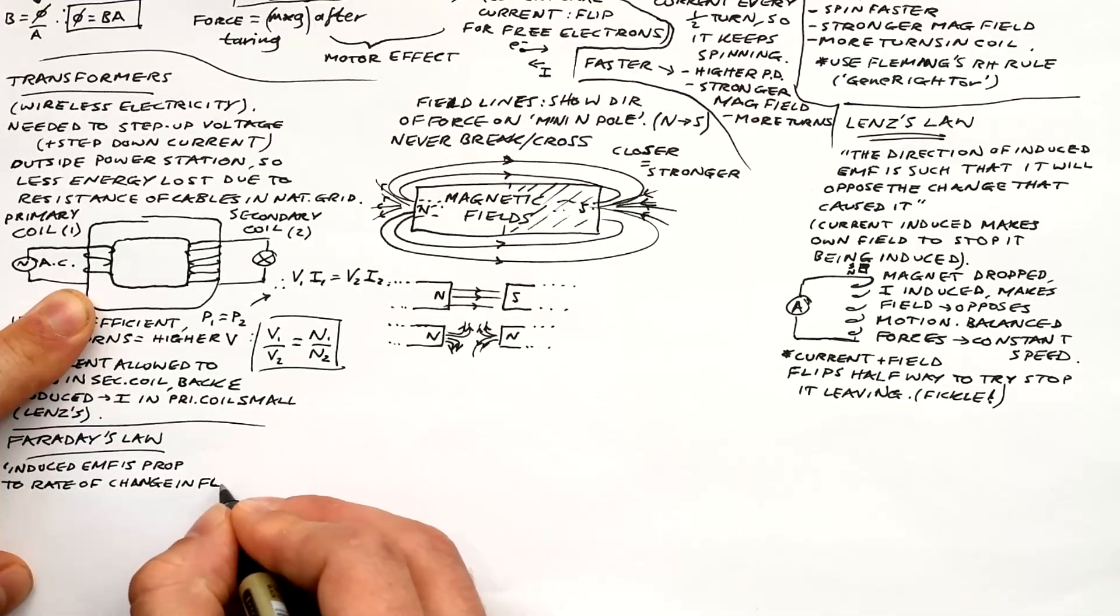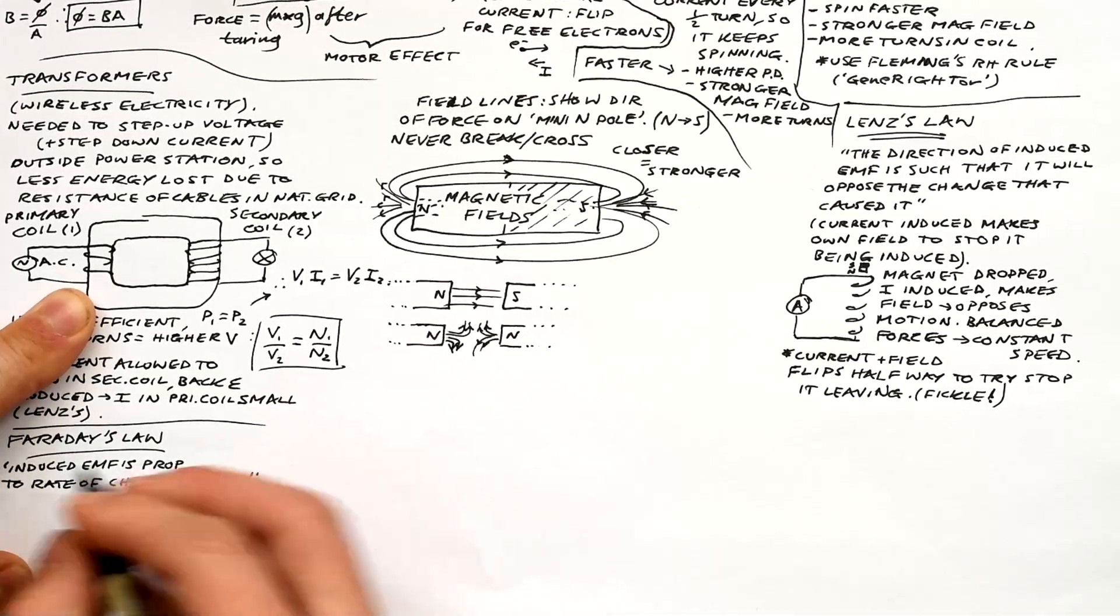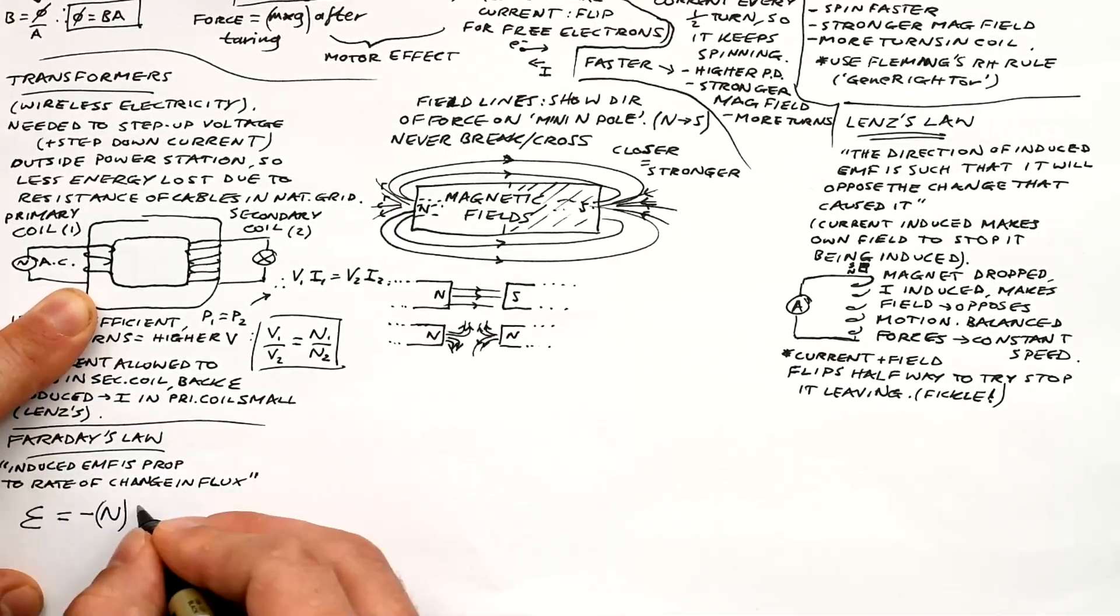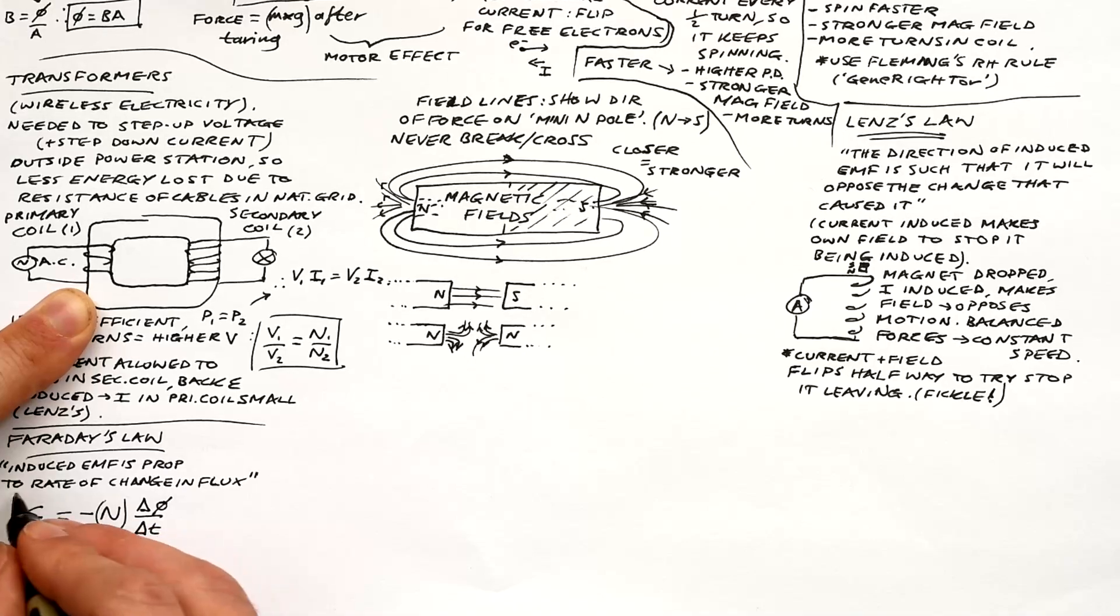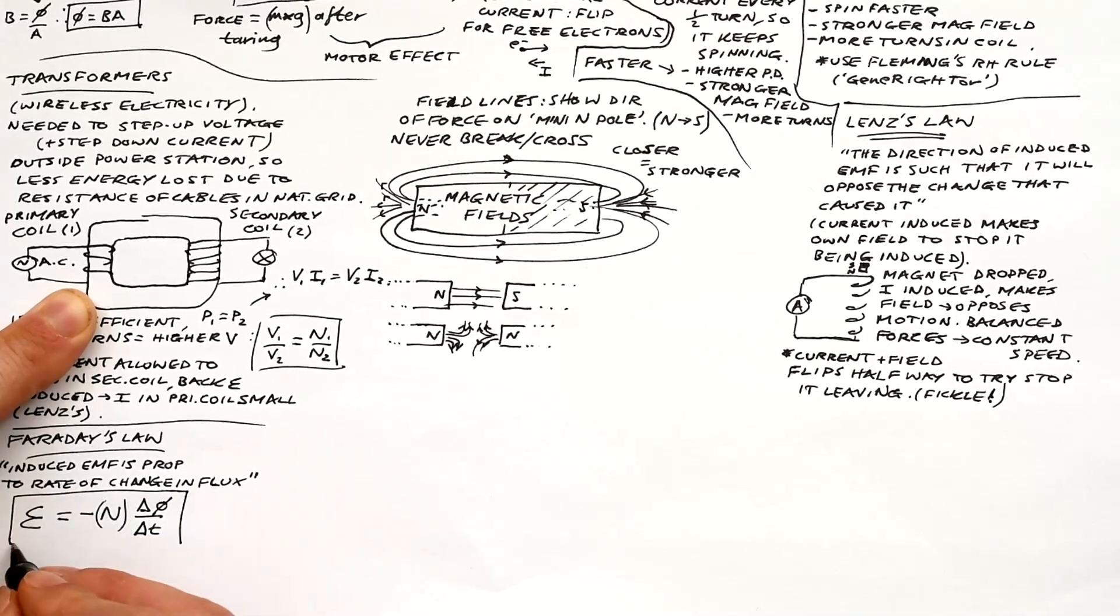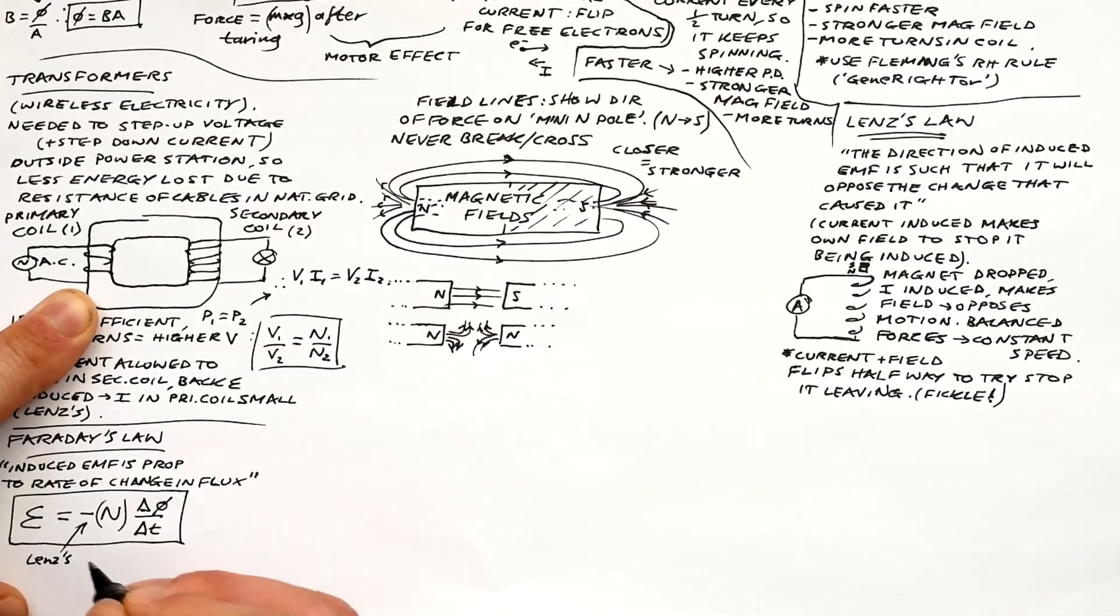Faraday's law is this induced EMF is proportional to the rate of change in flux. Here's the equation epsilon equals minus. That's just for Lenz's law showing that it's the opposite. We don't really care about it. It's not important. And then delta phi by delta t, rate of change of flux. And yeah, we can times by n as well to get the actual EMF induced if we times by the number of turns in the coil.